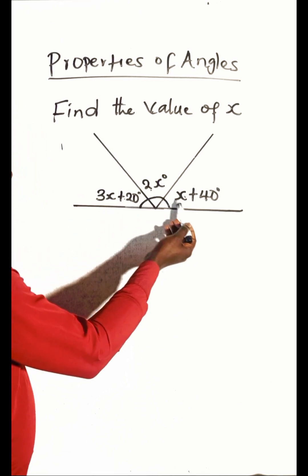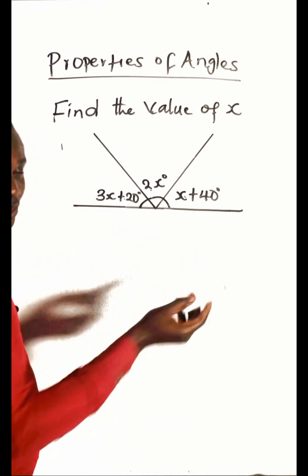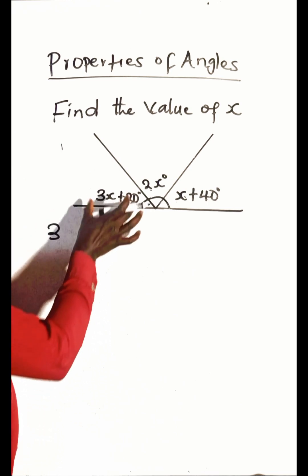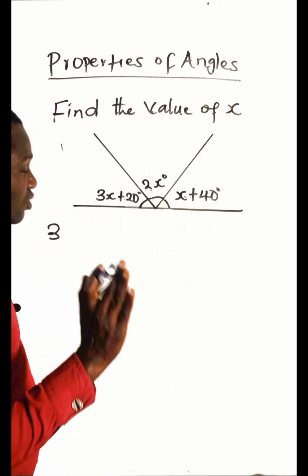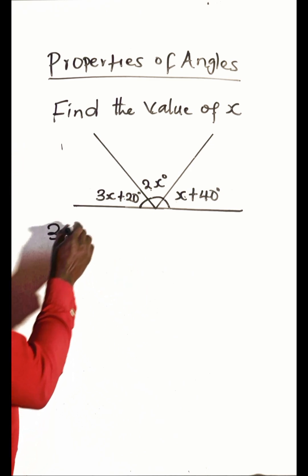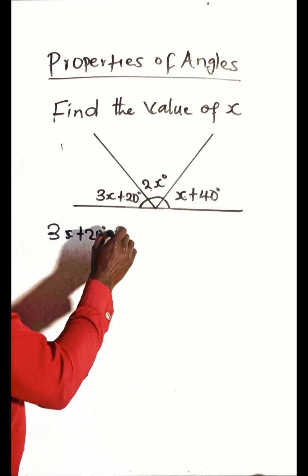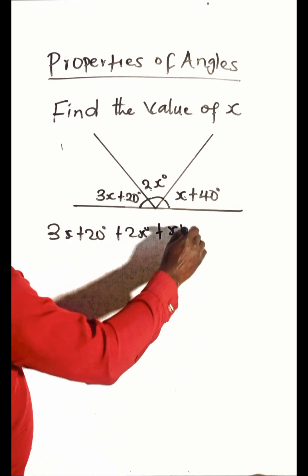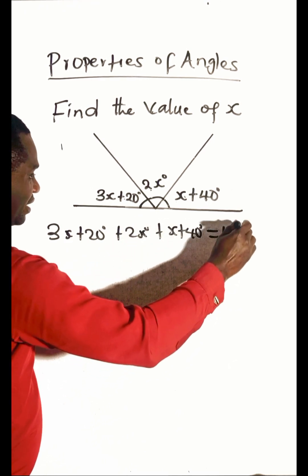angles on the same straight line add together to give you 180 degrees. So if you add these three angles, you should get 180 degrees. Therefore, 3x + 20 + 2x + x + 40 will equal 180. That is the law.